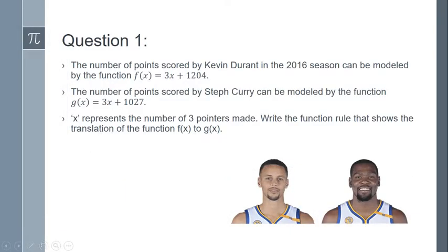Question one: The number of points scored by Kevin Durant in the 2016 season can be modeled by the function f(x) = 3x + 1204. The number of points scored by Steph Curry can be modeled by the function g(x) = 3x + 1027. In this case, x represents the number of three-pointers made. Write the function rule that shows the translation of the function f(x) to g(x).